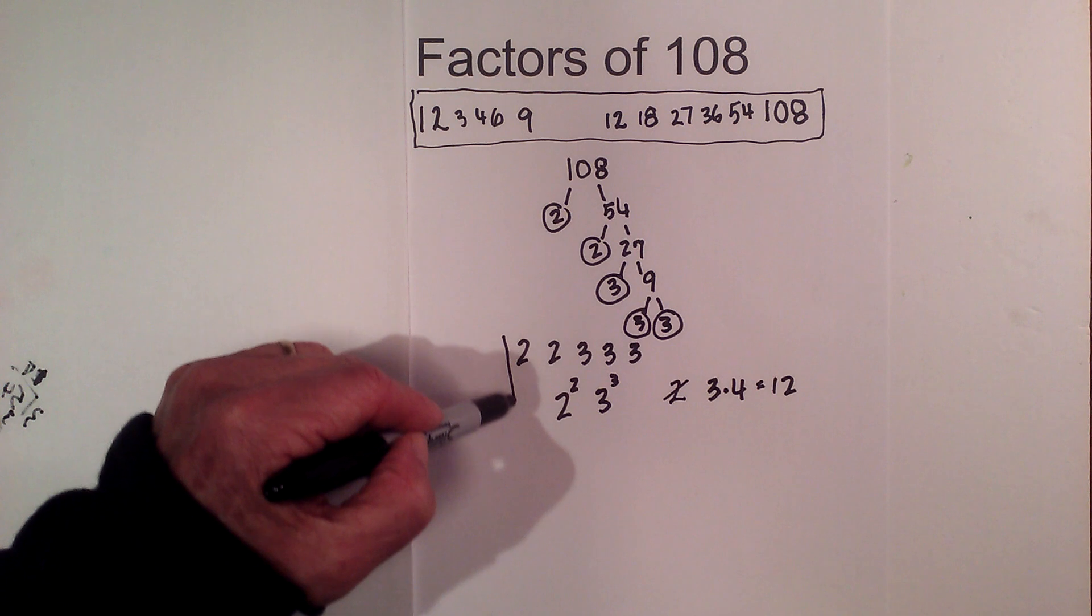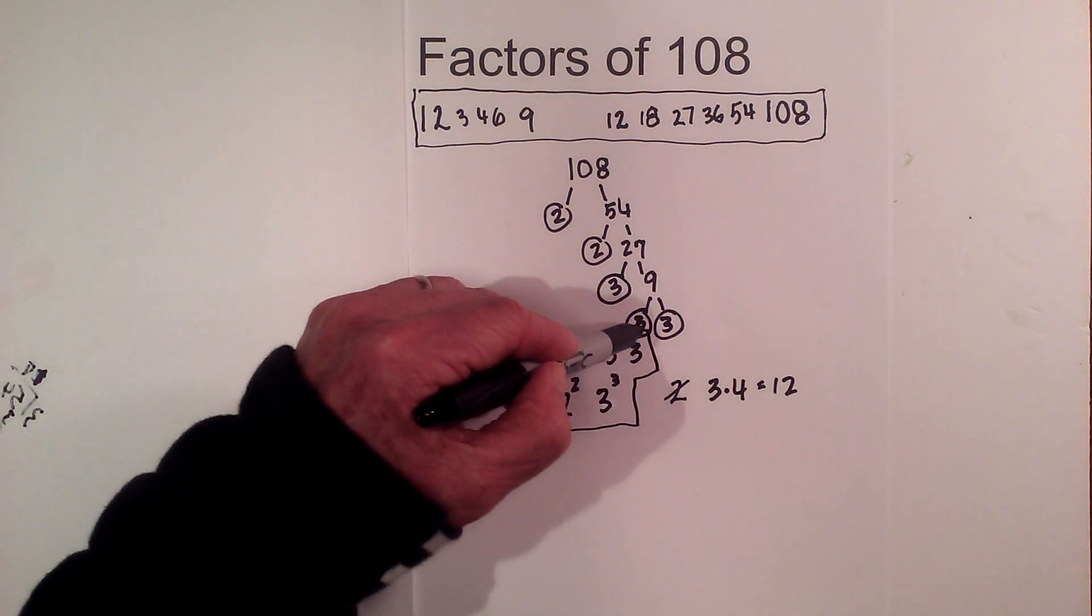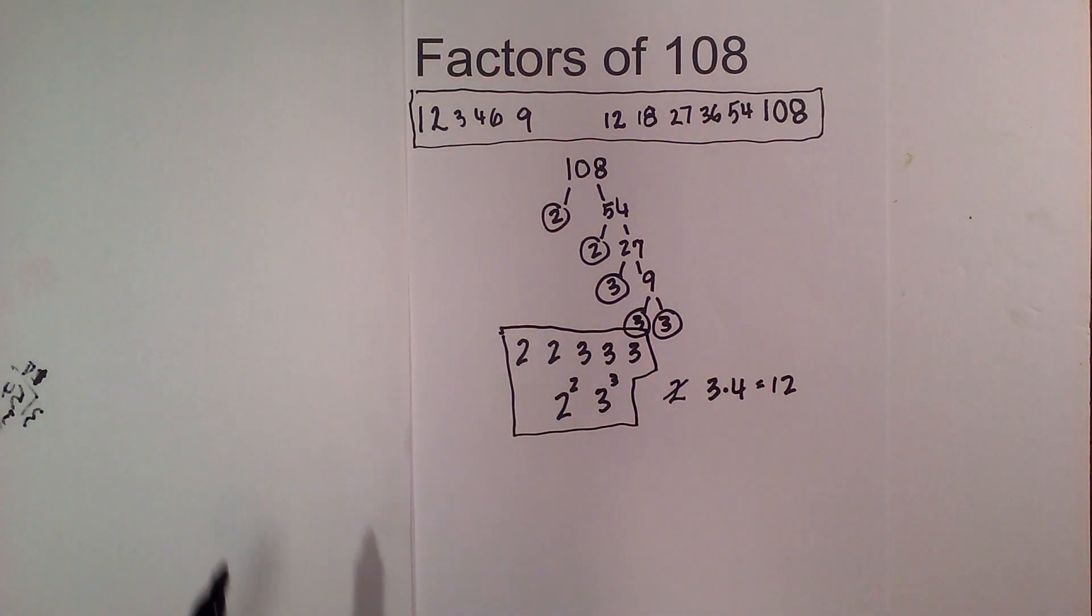And as a bonus, here are the prime numbers that multiply together to equal 108. If you need more information on finding factors of numbers, this playlist should help. Thanks for watching. Moomoo Math uploads a new math and science video every day. Please subscribe and share.